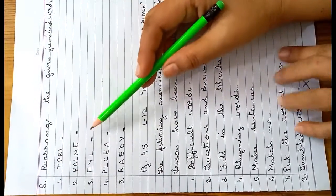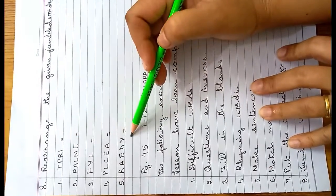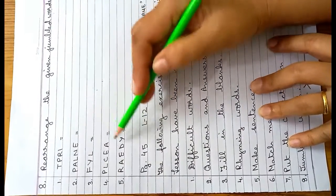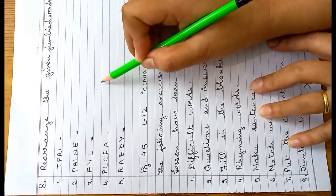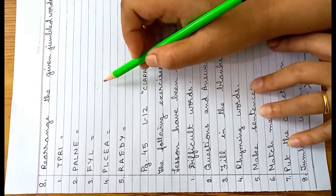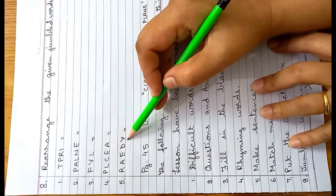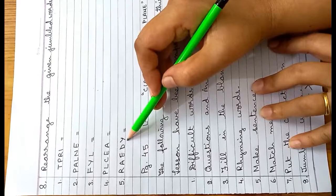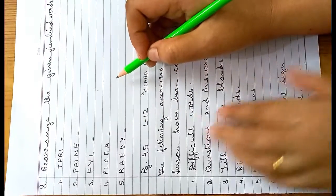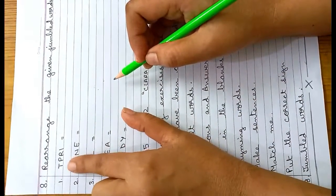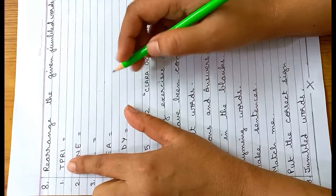Now children, this is the last exercise of this lesson — Jumbled Words. In this exercise, words are given with no meaning. You have to rearrange these words to give a meaningful word. Jumbled words are words which, when rearranged, give a meaningful word.